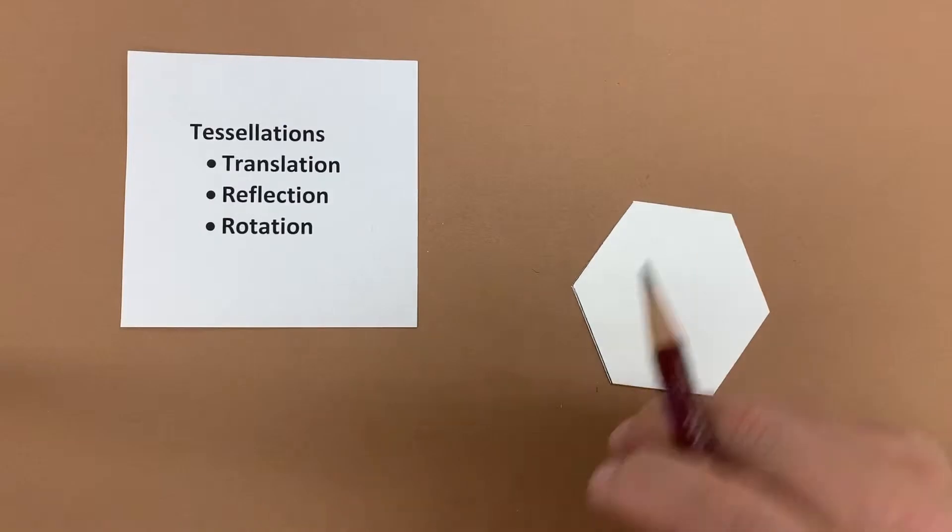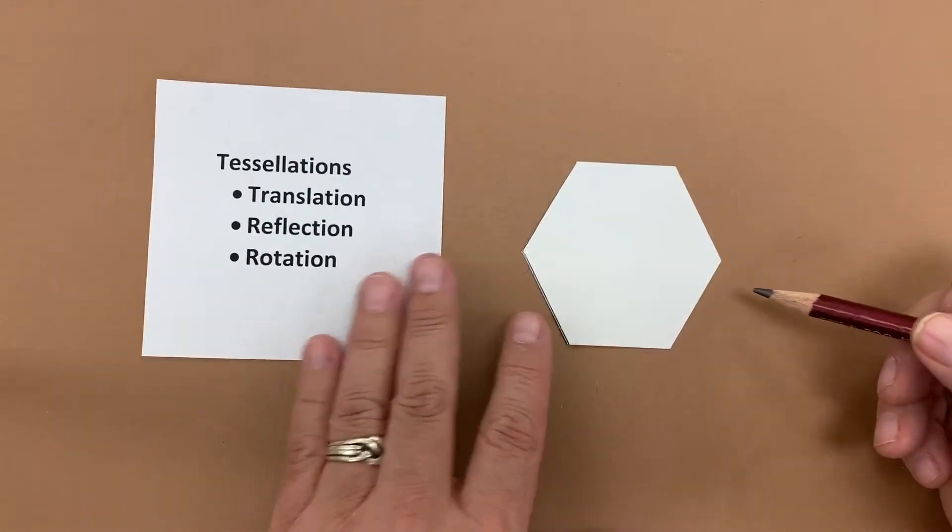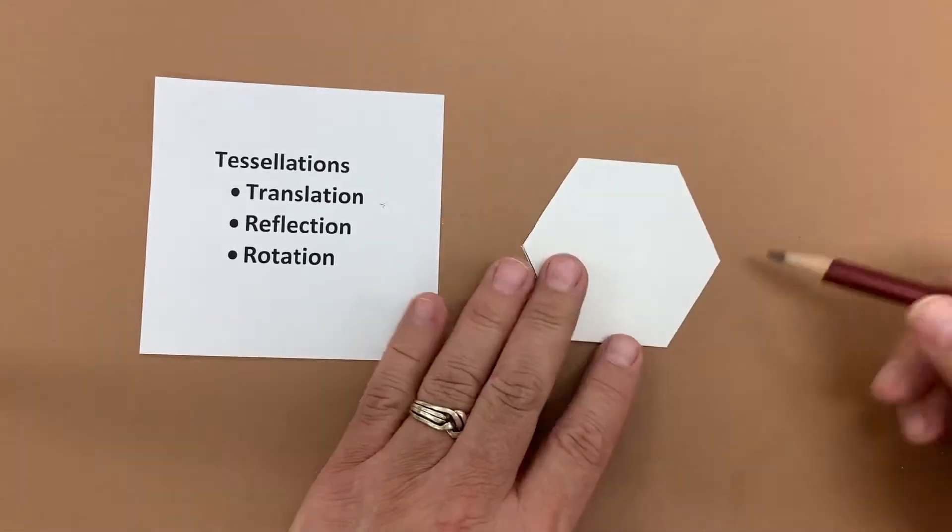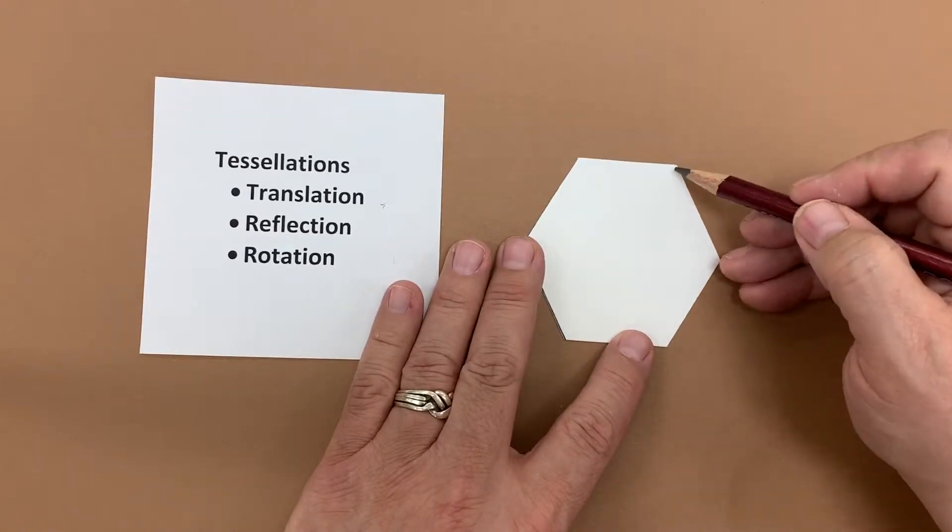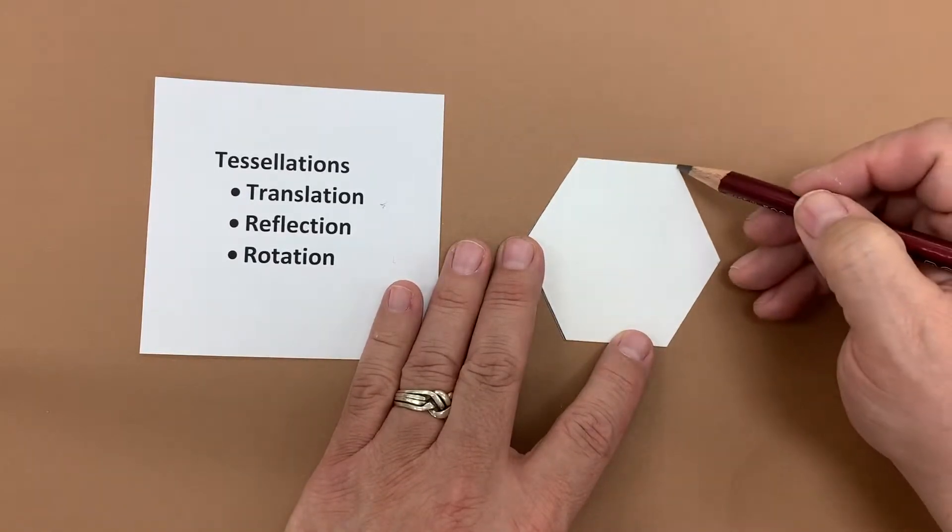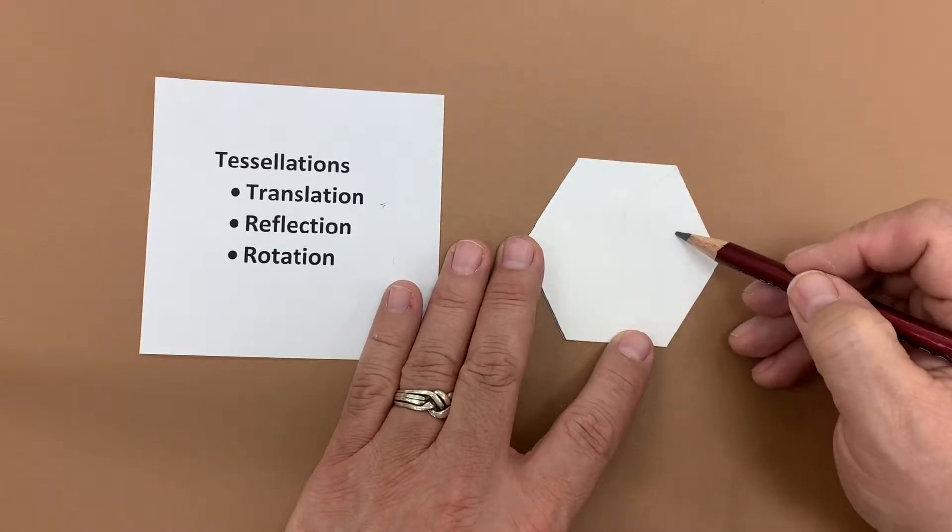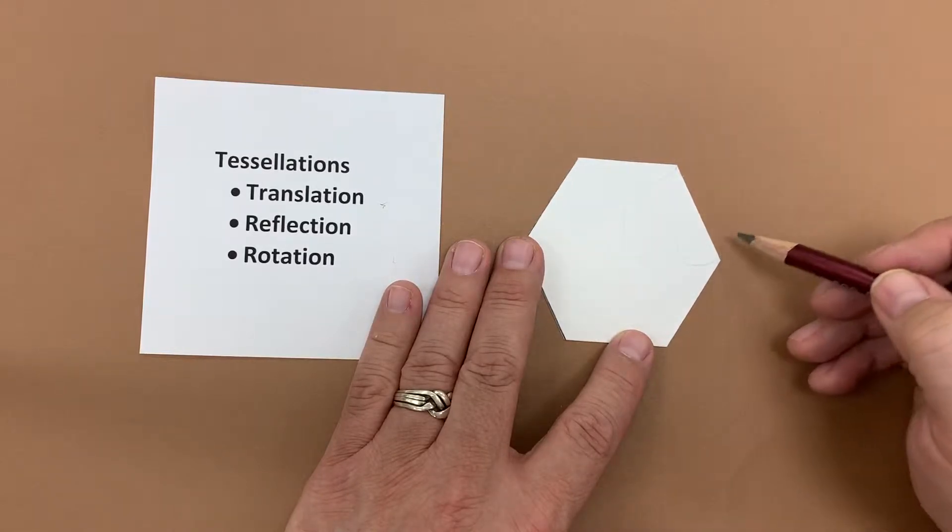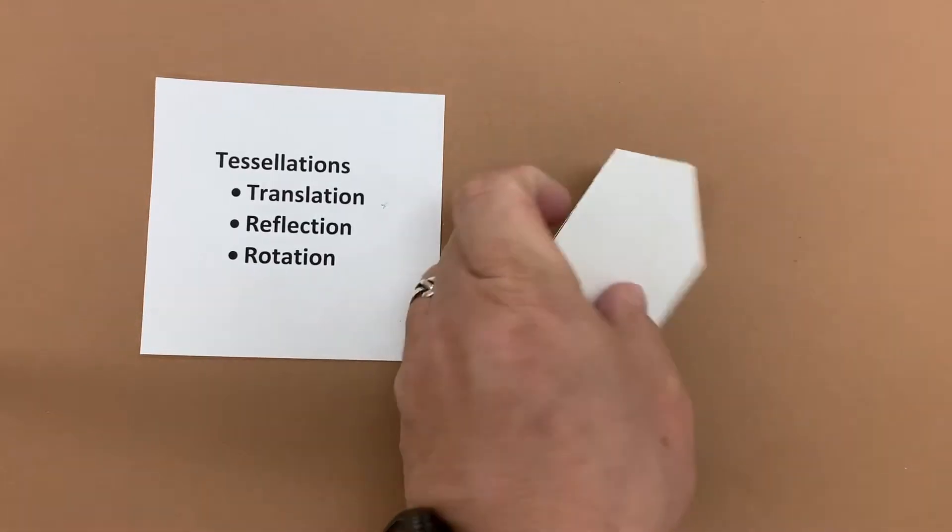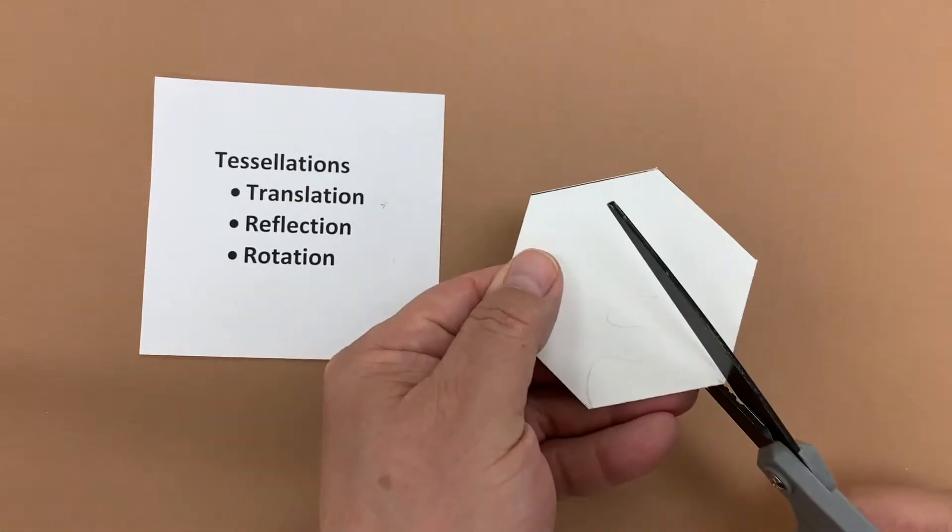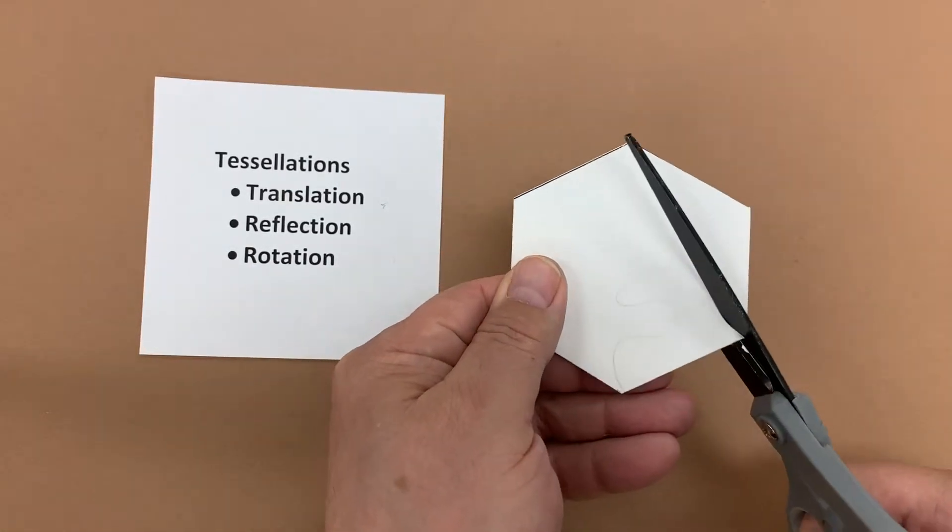So for tessellating a hexagon we use the translation method. You're going to go from one corner to an adjacent corner and cut out a line. It has to have a little bit of attitude to it. It can't be overly complicated and shouldn't be overly simple. So go ahead and cut out a line.